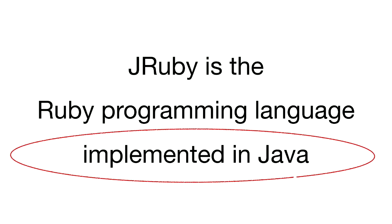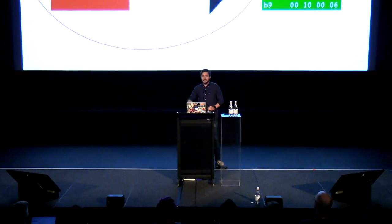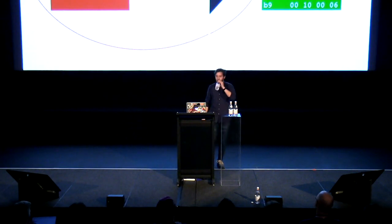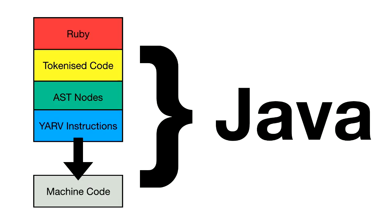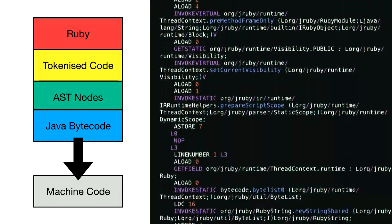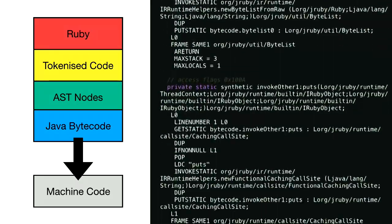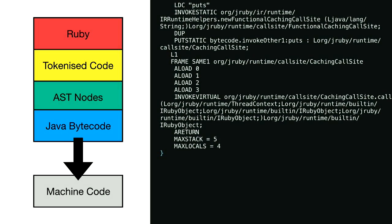So if JRuby is the Ruby programming language implemented in Java, this is what it looks like. Essentially all this means is the part that handles turning our lovely Ruby into machine code is written in Java rather than C. Instead of YARV instructions, we end up with Java bytecode — slightly more verbose, but you get the idea. This Java bytecode can be run on the JVM — the Java Virtual Machine. So that is essentially JRuby.